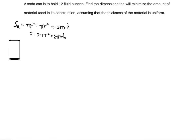We will need to take the derivative using this equation, but before we do that, we need to make sure that when we take the derivative, we will only have one variable on the right side. Right now there's the radius and the height — two variables. Since this is an optimization problem, we need to express the total surface area in terms of one variable. For this reason, we're going to use the provided information that this soda can will have a volume of 12 fluid ounces.